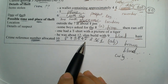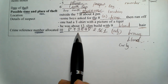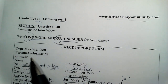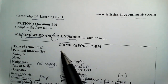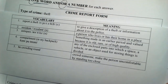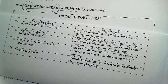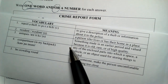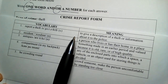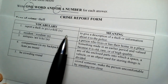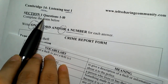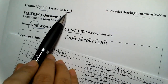That covers IELTS Listening Test 1, Cambridge Book 14, Section 1. Before we finish, take note of some vocabulary — it will be really useful for revision and you may see these words in a real test. Don't forget to like and share this video. The next part will guide you step by step through Sections 2, 3, and 4.